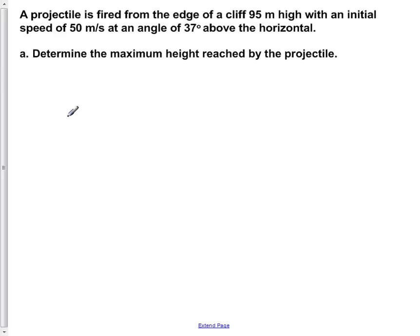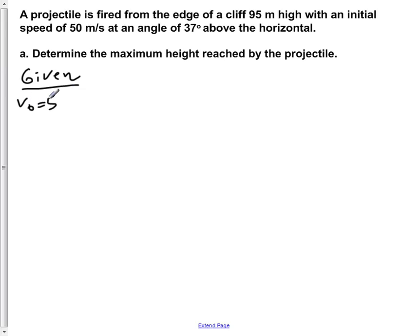A projectile is fired from the edge of a cliff 95 meters high with an initial speed of 50 meters per second at an angle of 37 degrees above the horizontal. Part A: determine the maximum height reached by the projectile.